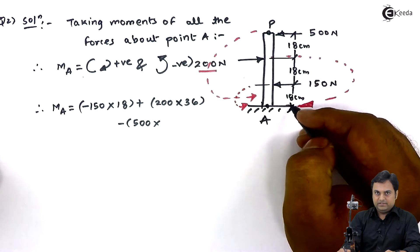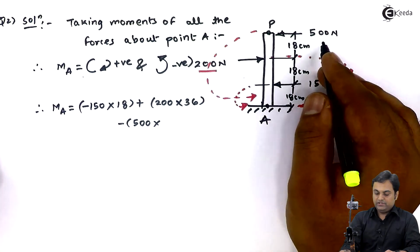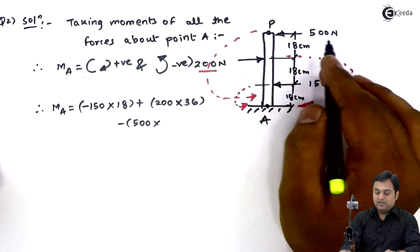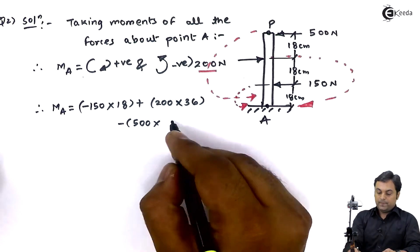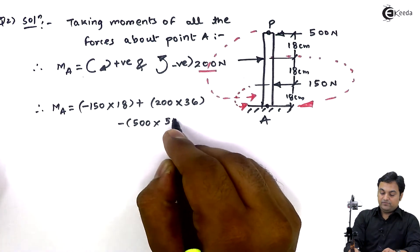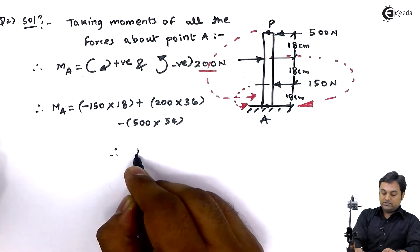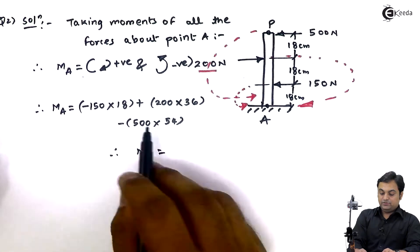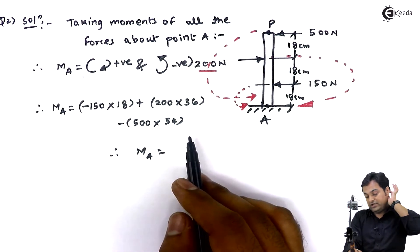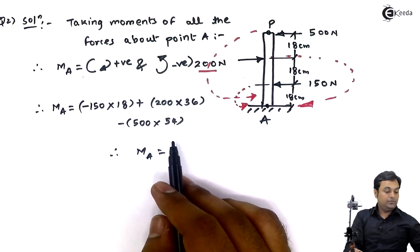That will give me 54. So once I calculate all the values, all these brackets really carefully, my answer of moments about point A comes out to be...